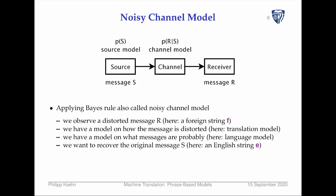The way we do this is to ask what messages are actually probable — what kind of things are being sent. If through a telephone wire we hear a word, and there's a very common word it sounds like and a really obscure word it also sounds like, probably the more common word is more likely. That's the source model — in our case that's the language model.